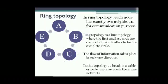Next is ring topology. In ring topology, each node has exactly two neighbors for communication purposes. The connection structure is in a circle — that is why it is called ring topology. Ring topology is like line topology, where the first and last computers are connected to each other to form a circle. The flow of information goes in only one direction.